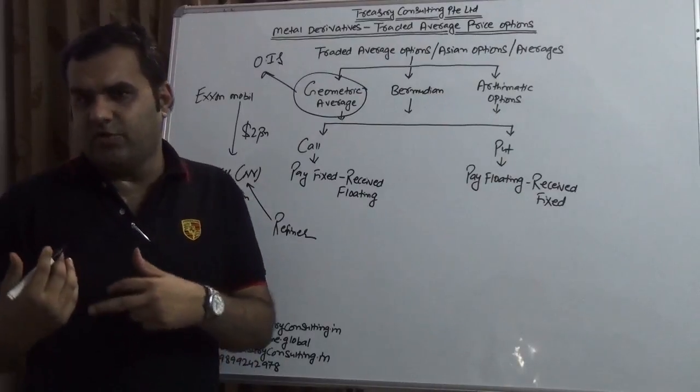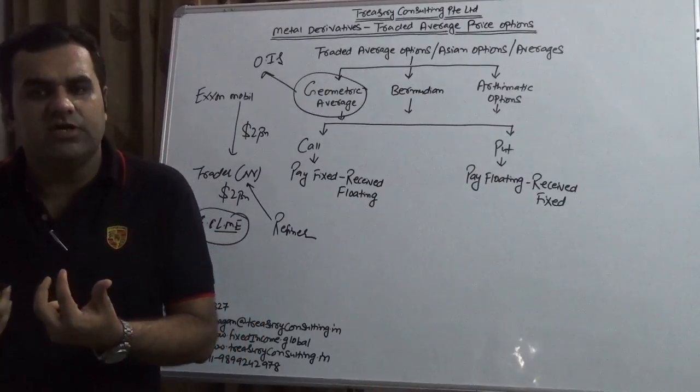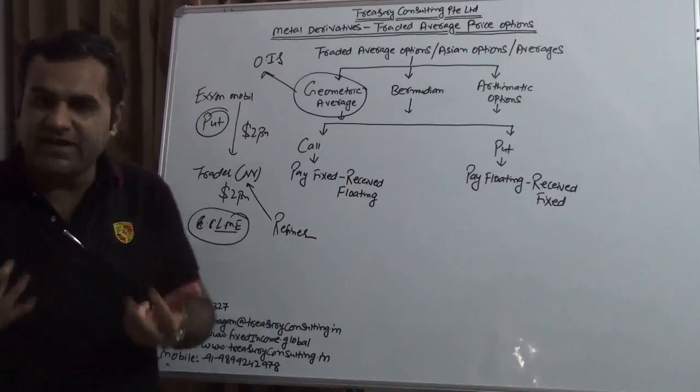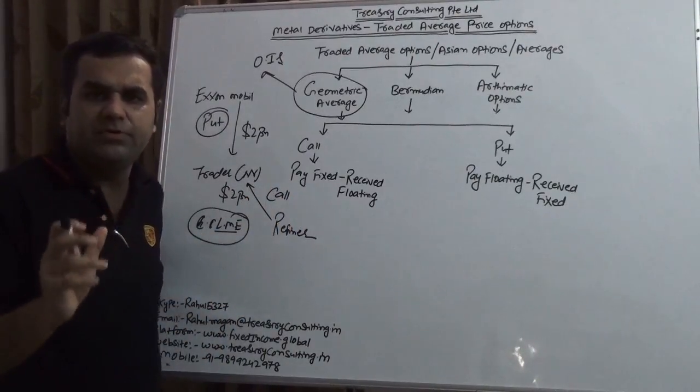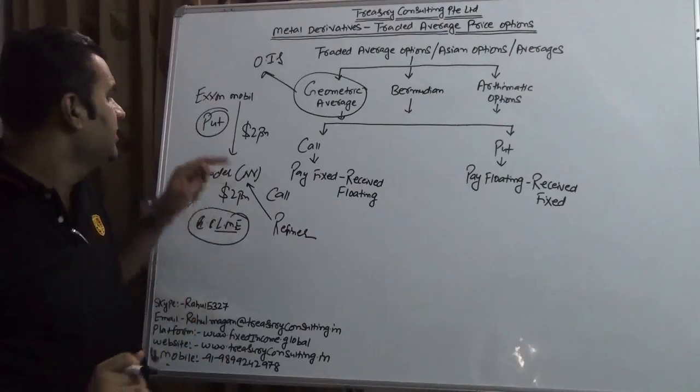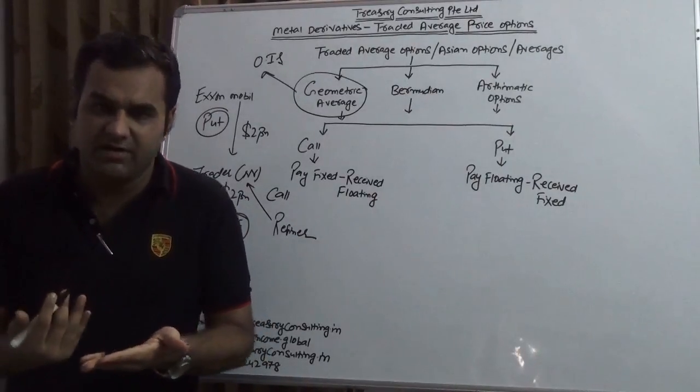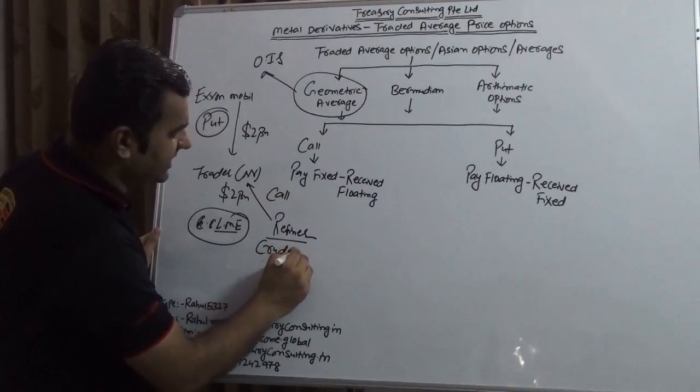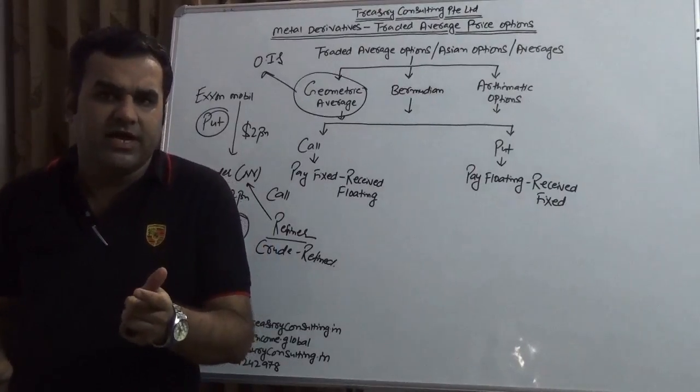Since ExxonMobil is a producer and wanted to sell because ExxonMobil is the largest producer of petrochemical oil, ExxonMobil would be taking a put option. On the contrary, the refiner wants crude—he wanted to buy crude so he would be taking a call option. I repeat: ExxonMobil is the largest producer of crude in the globe, so they want to sell the crude because whatever they are producing they want to sell. So they will go for put option. On the contrary, the refiner needs crude so he can create refined products and earn the crack. I hope you remember that crack is nothing but crude minus refined.